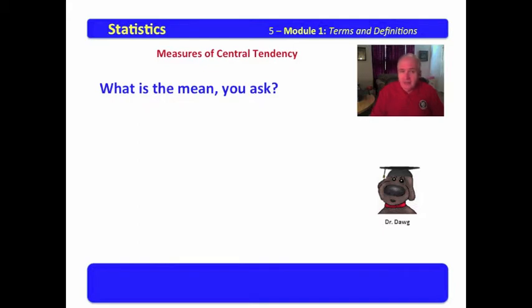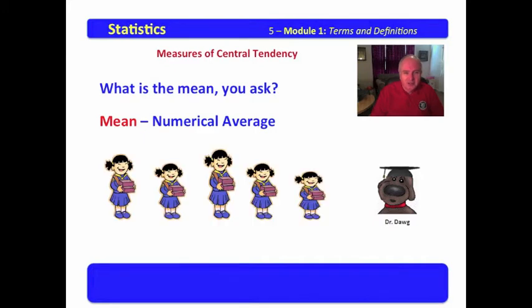What is the mean, you ask? Why thank you for asking that question. The mean is the numerical average. What that means is that we have values that are numbers. We can average them. You will recall that the average you add up and divide by the number you have. Sounds clear, doesn't it? Well, let's look at some pictures.